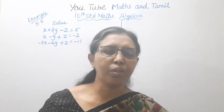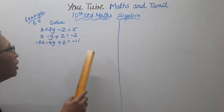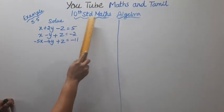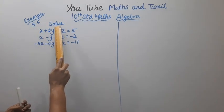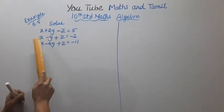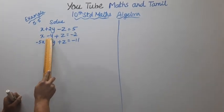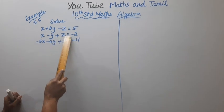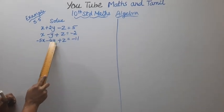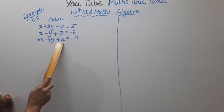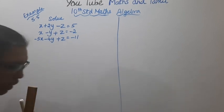Hello students, welcome to Maths and Tamil channel. 10th Standard Maths Algebra Example 5.5: Solve x plus 2y minus z equal to 5, x minus y plus z equal to minus 2, minus 5x minus 4y plus z equal to minus 11.